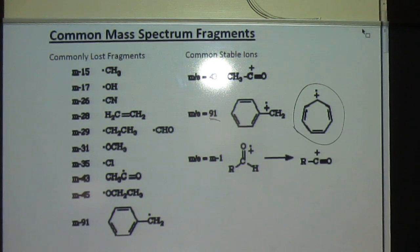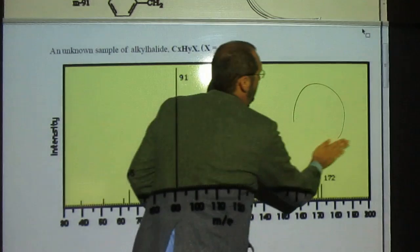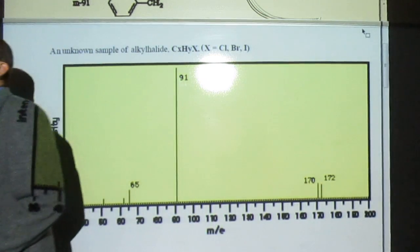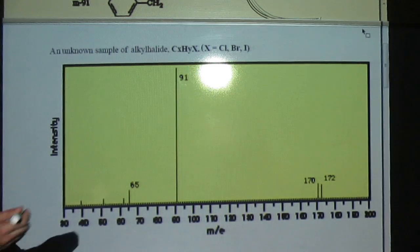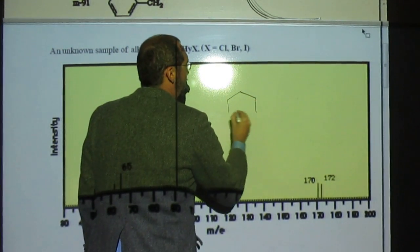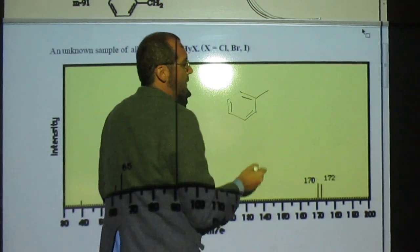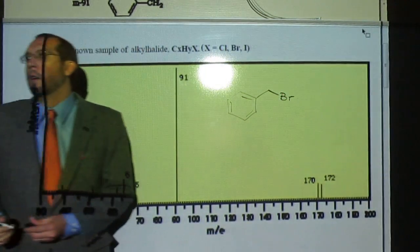And, of course, if we add 91 to 79, we get 170 here. And if we add 91 to 81, we get 172. So the structure for this molecule is almost certainly the benzyl group with a bromine attached to it, or benzyl bromide.